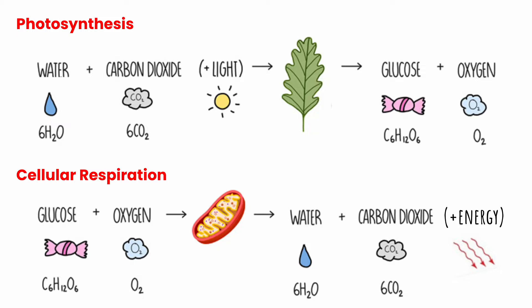Cellular respiration happens in both plants and animals. Since animals do not do photosynthesis, they have to eat glucose and get their glucose by eating food — eating plants or eating other animals that have already consumed the plants. Looking at the reaction: glucose, C6H12O6, reacts with oxygen and is broken down into water, H2O, carbon dioxide, CO2, and it also releases energy.